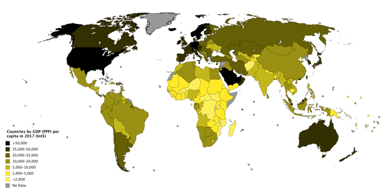The second way of estimating GDP is to use the sum of primary incomes distributed by resident producer units. If GDP is calculated this way it is sometimes called gross domestic income (GDI). GDI should provide the same amount as the expenditure method. By definition, GDI is equal to GDP.